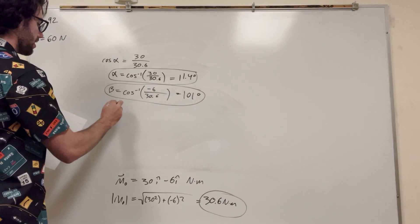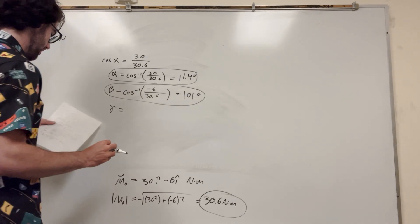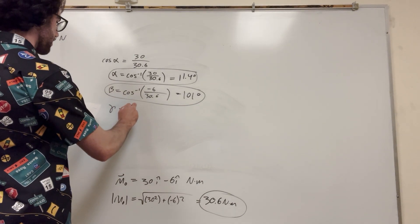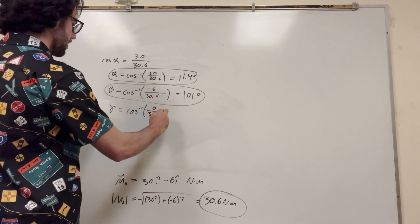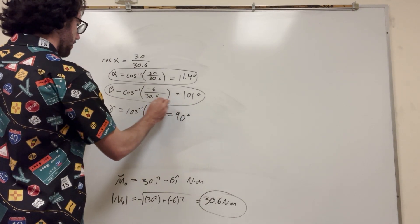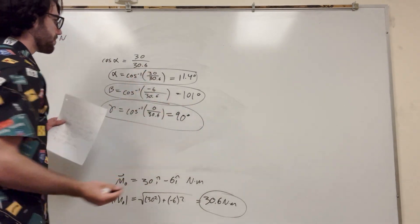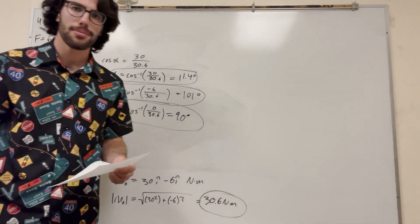And then gamma is the z direction. So it doesn't go in the z direction. So it's just going to be zero. So cosine inverse of zero over 30.6. Inverse cosine of zero is going to be equal to 90 degrees, of course. There we go. So that's alpha, beta, gamma. And there's the magnitude down there. So that's how you solve this problem.